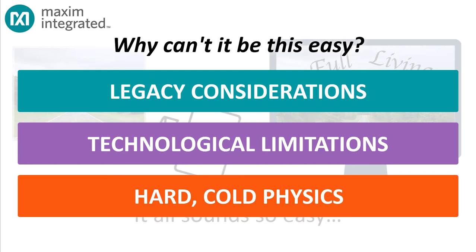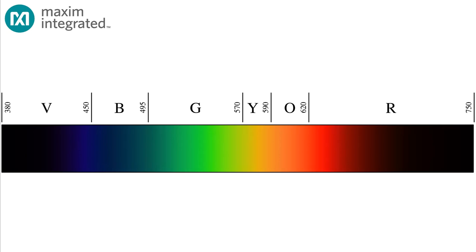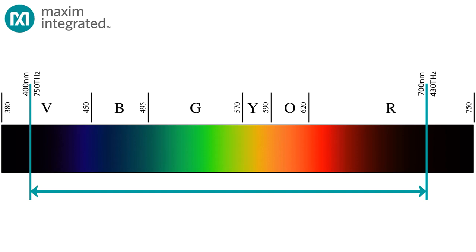To tell this story, we need to talk about color. Pretty much everyone understands that white light is made up of a wide range of wavelengths. The human eye can perceive electromagnetic radiation in the range of about 400 to about 700 nanometers, or put another way, in the frequency range of about 430 terahertz to about 750 terahertz. Venture outside this range and your eyes see nothing.